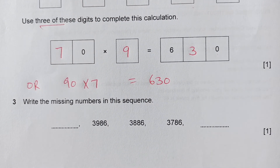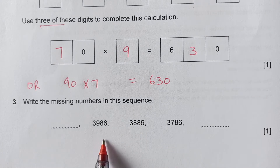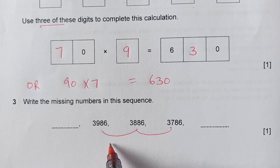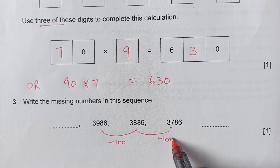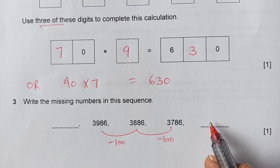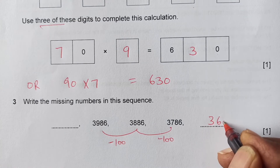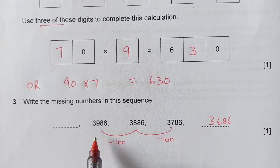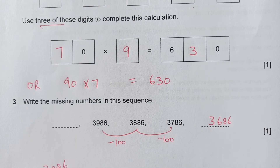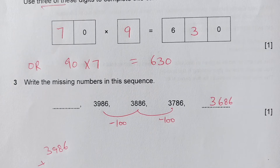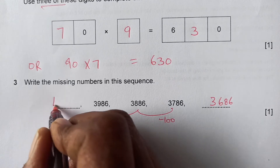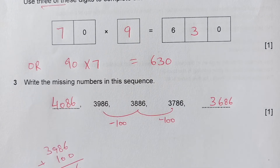Number 3: write the missing numbers in the sequence. Looking at the sequence, each term is found by subtracting 100. So if you subtract 100 you get 3686. Going the other way, you add 100: so the missing numbers are 3686 and 6889 plus 1, giving 4086.